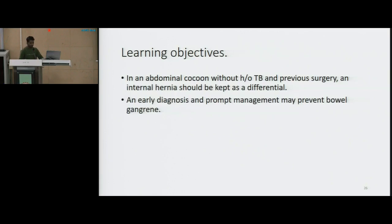What we have learned from this case is that we must keep in mind that even with the latest imaging modalities, the diagnosis of internal hernia is quite challenging and there should be a high degree of clinical suspicion. In abdominal cocoon without any history suggestive of tuberculosis, previous surgery, or any other condition leading to an intra-abdominal reaction, an internal hernia should be kept as a differential diagnosis. Delaying diagnosis and surgical intervention is associated with potential disastrous complications like gangrene of the bowel and even death. An early diagnosis and prompt management may prevent bowel ischemia and can yield a good prognosis for these patients.